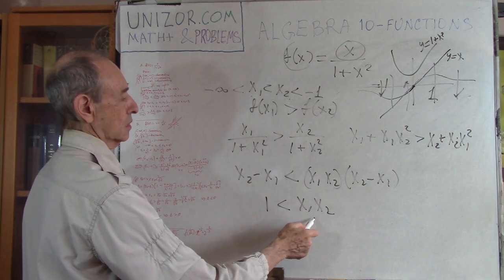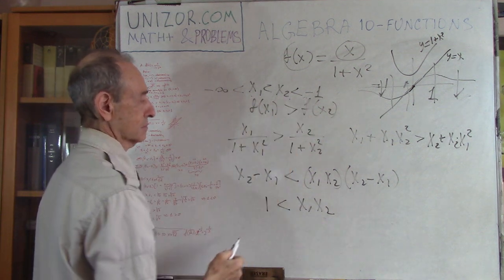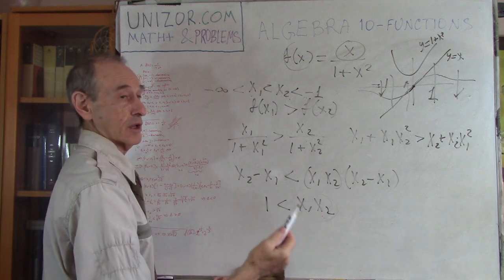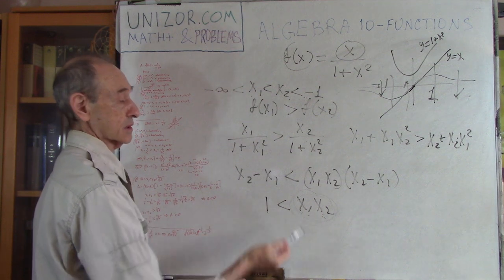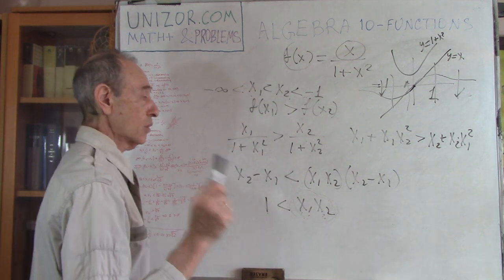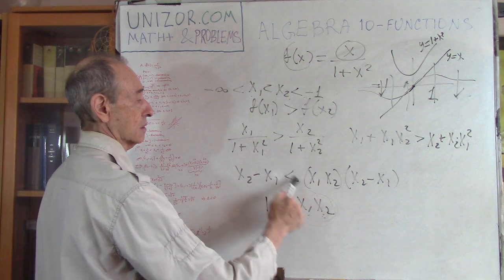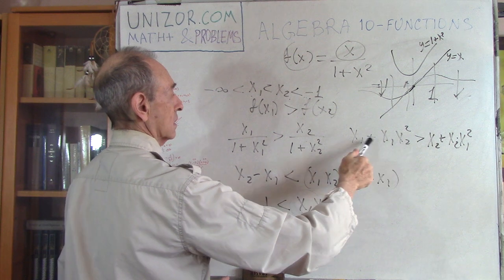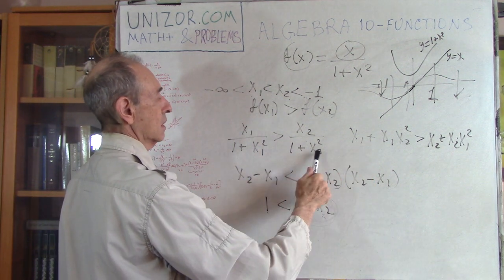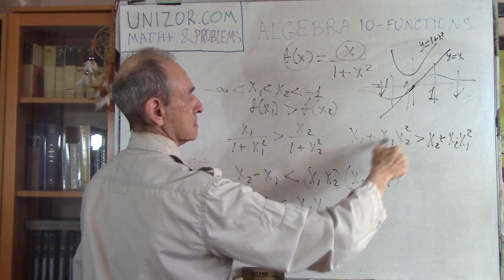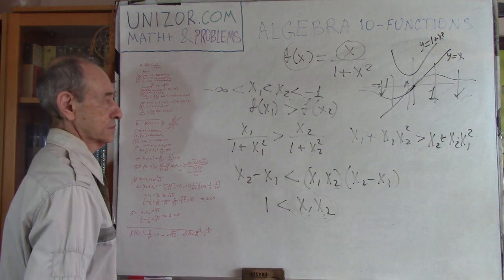Both are negative, so their product is positive — a positive number with absolute value greater than one — so the inequality is obviously true. Now I say that all our transformations are reversible: from the obvious statement I can go backwards, multiplying both sides by a positive number, regrouping, and then dividing by the product of (1 + x1²)(1 + x2²). That takes us back to the original inequality. That's the end of the proof.